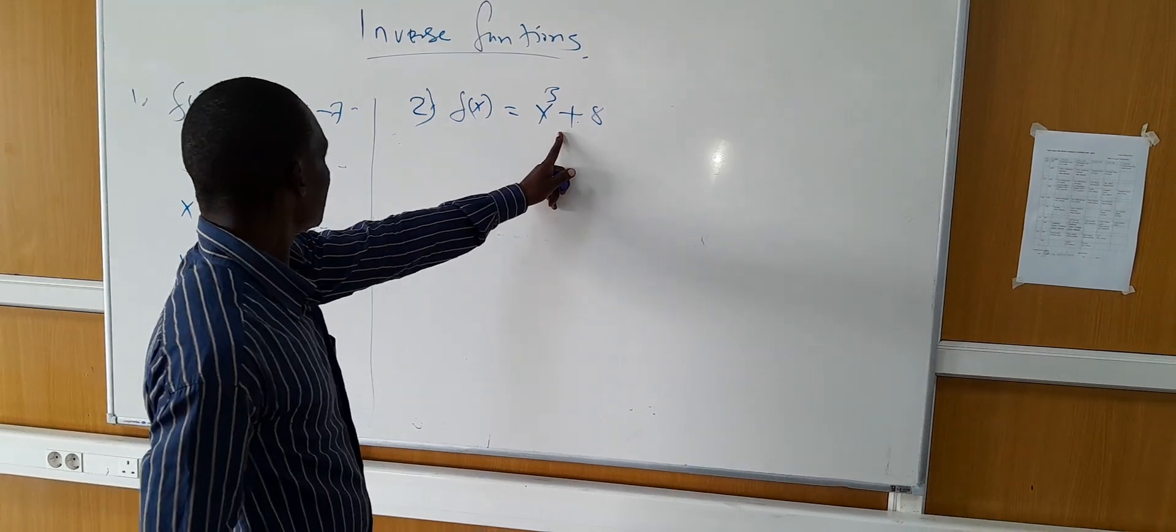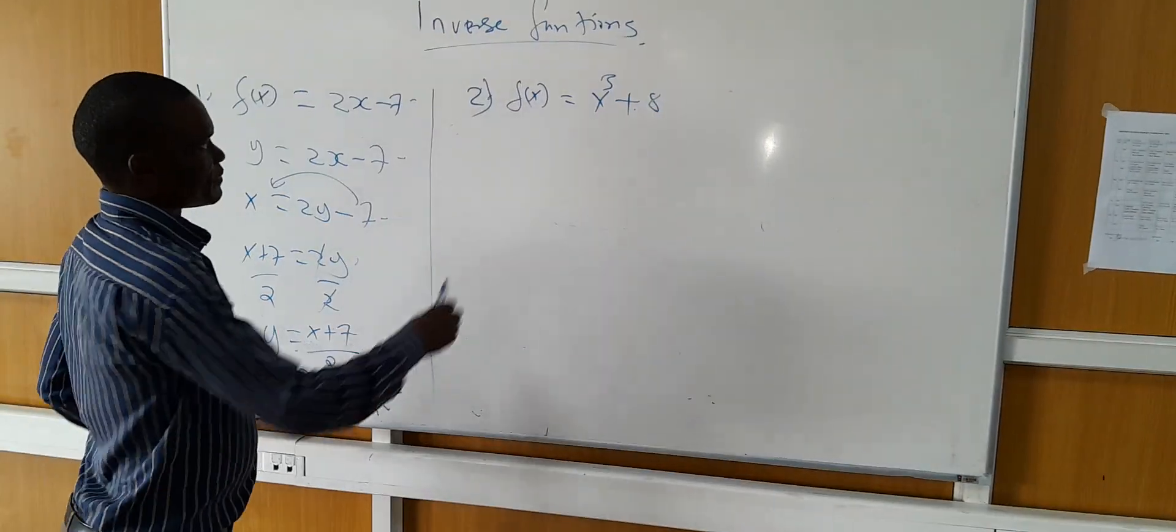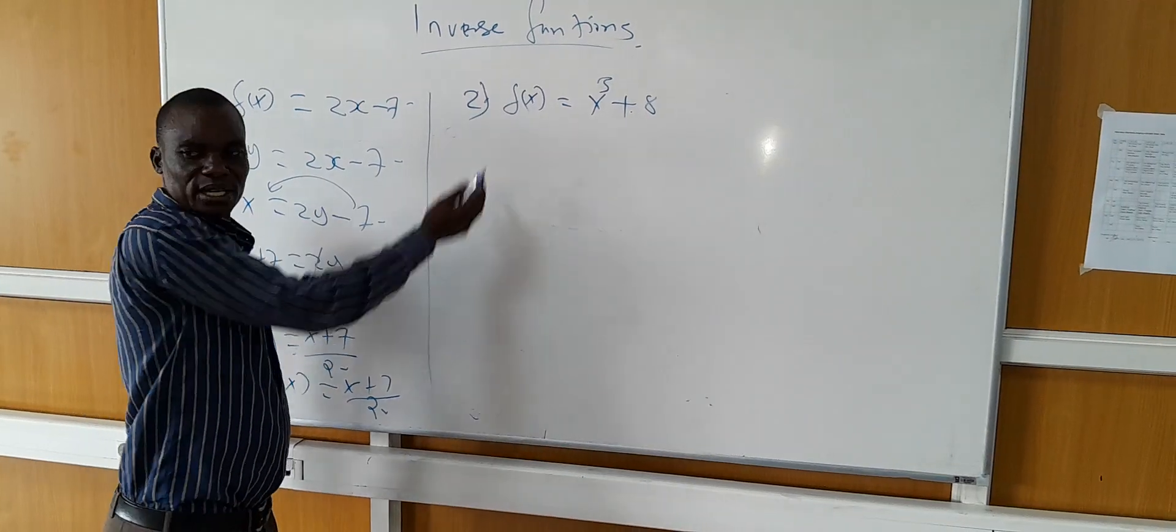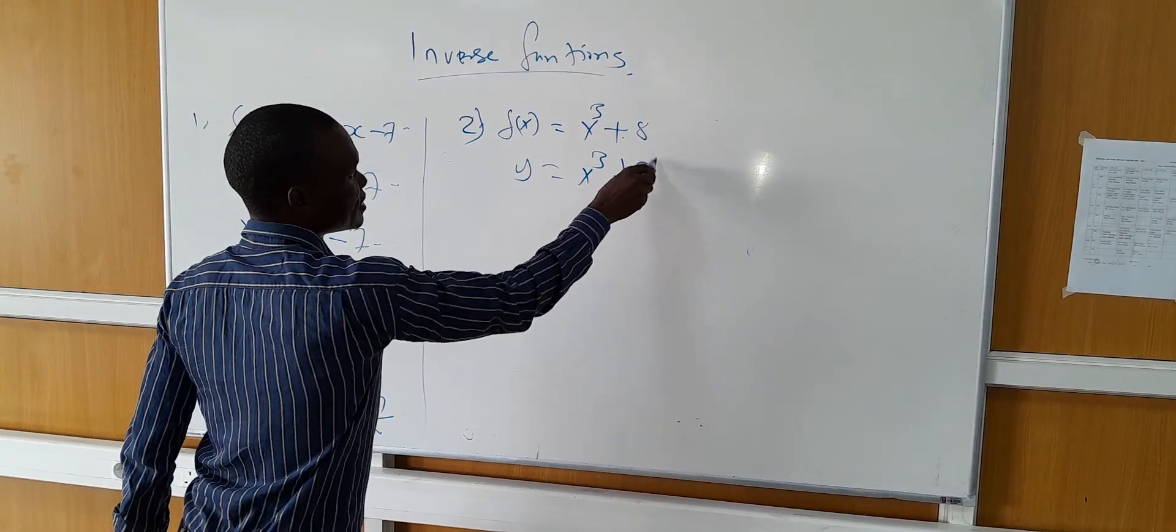Alright, let's come to the second one. The first step, replace f of x with y. y is equal to x cubed plus 8.